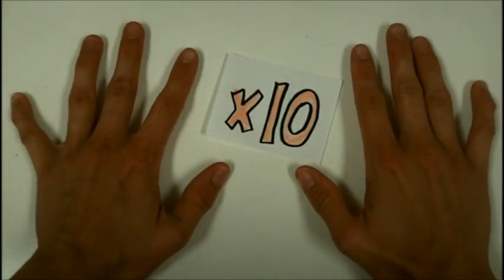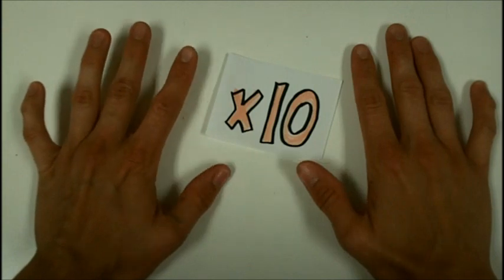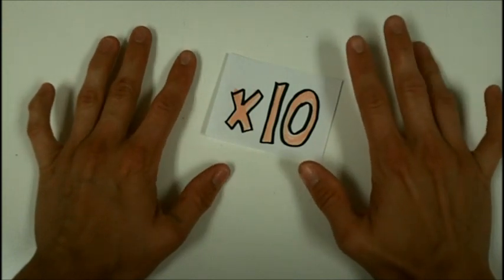Count by tens. Ready? Go. 10, 20, 30, 40, 50, 60, 70, 80, 90, 100.